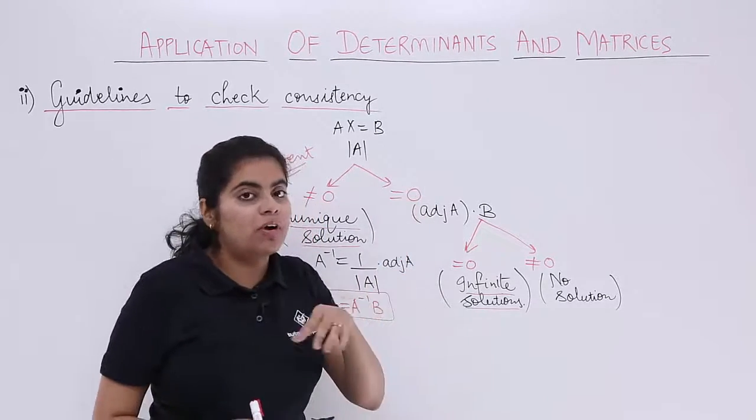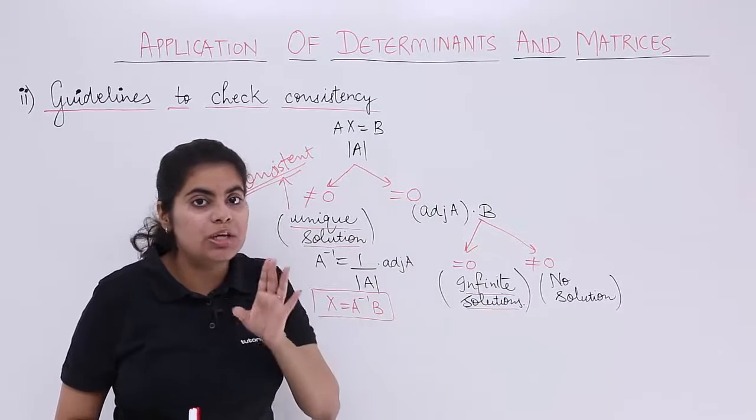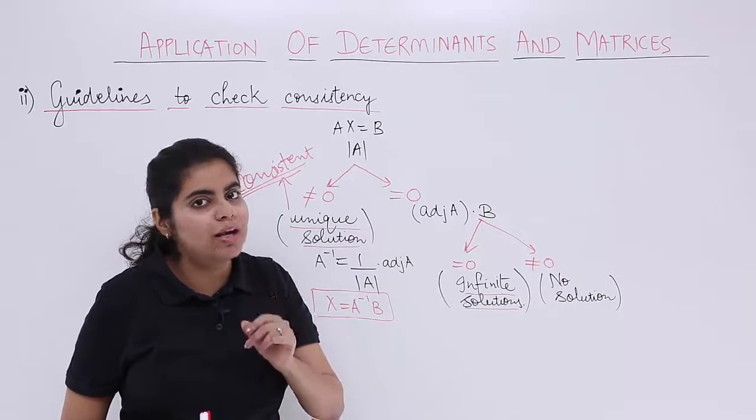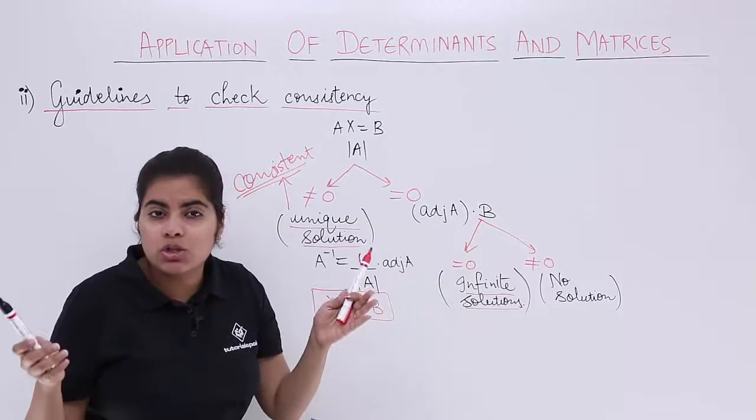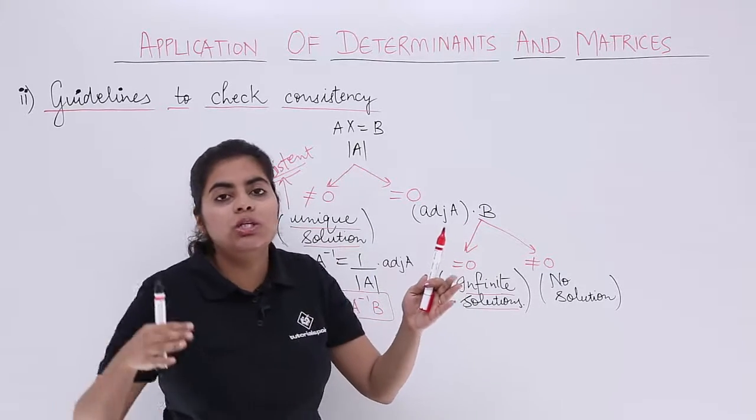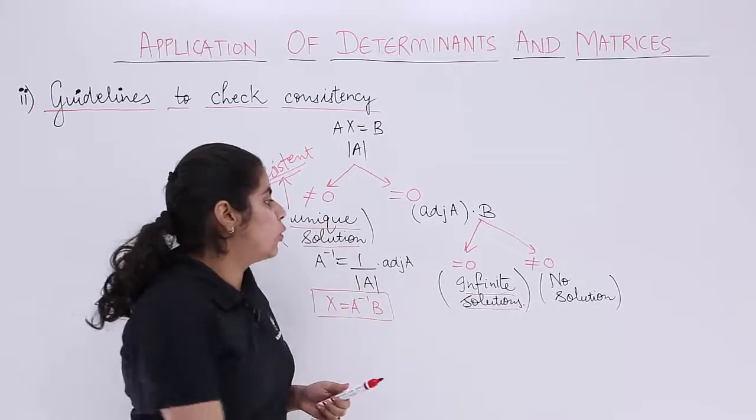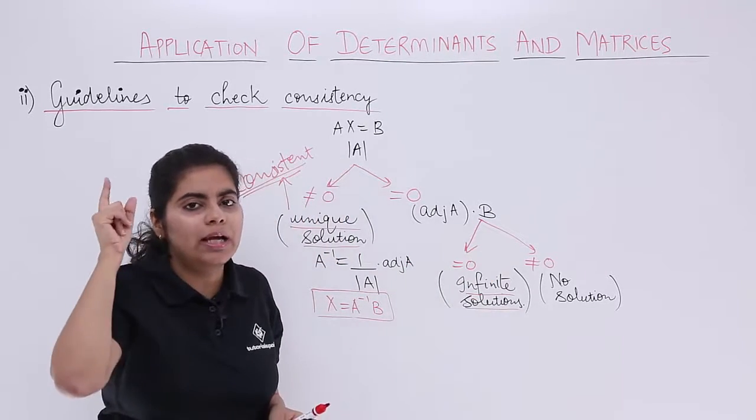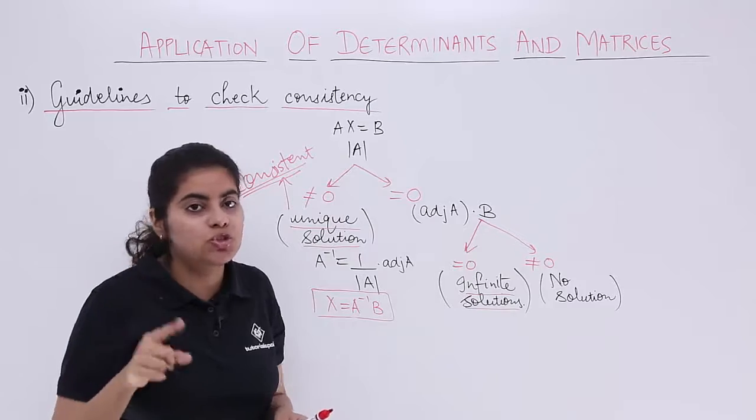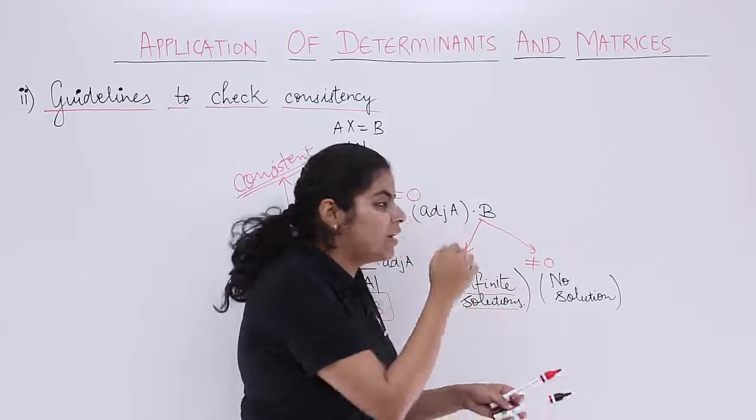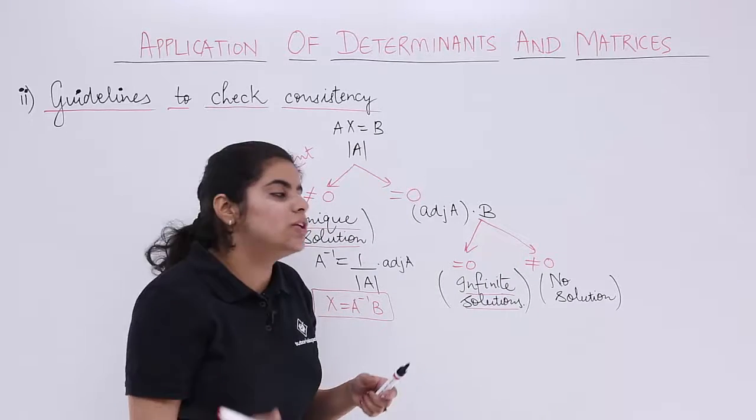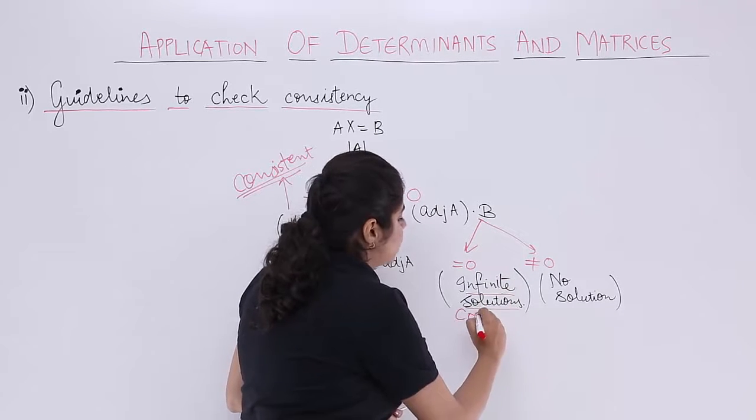Similarly, if del value you find is equal to 0, you need to find out adjoint A into B. And then again two things will arise. Either it will be 0 or it will be not 0. If it is 0, you need to know that I have infinite solution. Consistent system again means one or more solution. If infinite, that means again more solution. So still it is consistent.